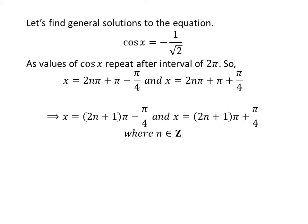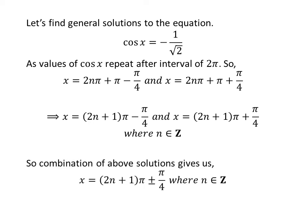Further simplification gives us the general solutions: 2 times n plus 1 times pi minus pi upon 4, and 2 times n plus 1 times pi plus pi upon 4. Combining these, the general solution of the equation is 2 times n plus 1 times pi, plus or minus pi upon 4, where n is an integer.